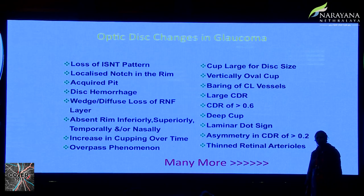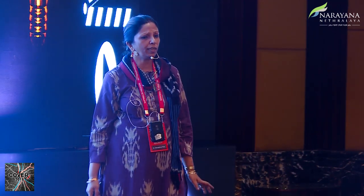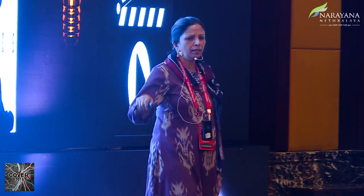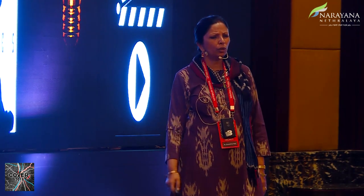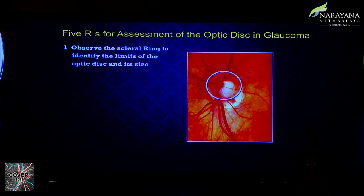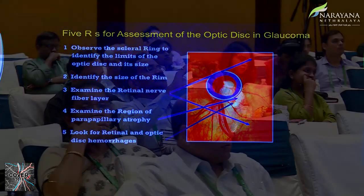Optic disc changes in glaucoma include many features, but the most important ones are loss of the ISNT pattern, localized notch in the rim — which are absolutely diagnostic factors — disc hemorrhage, large cup-disc size, vertically oval cup, bayoneting of the circumlinear vessels, and a large CDR. The five steps for assessment of the optic disc in glaucoma are: observe the scleral ring to identify the disc limits and size, identify the rim size, examine the retinal nerve fiber layer, examine the region of parapapillary atrophy, and look for retinal and optic disc hemorrhages.